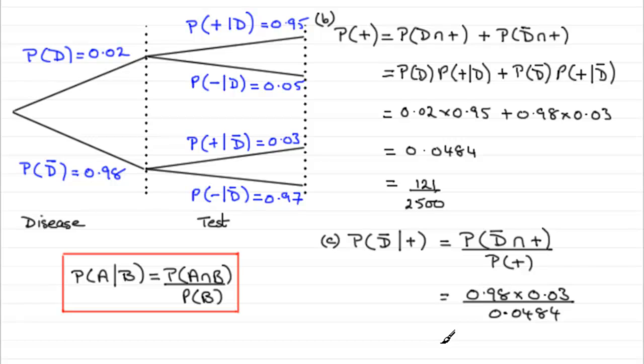And if you work that out, what you're going to find is an exact fraction, which is 147 over 242. You can leave it like that. Or, if you work it out as a decimal and round it to, say, three decimal places, you'll get 0.607 to three decimal places.